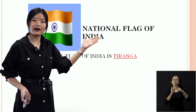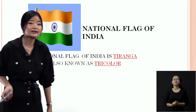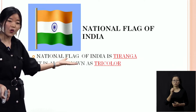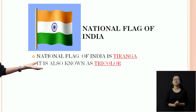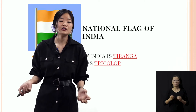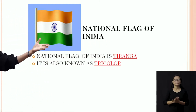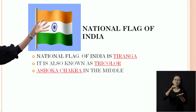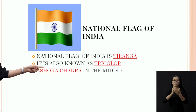Our national flag is also known as tricolour — T-R-I-C-O-L-O-R, tricolour. Now you all have observation power, right? So you know that our national flag has three colours. Before that, can you see a wheel in the middle? This wheel is called Ashoka Chakra — A-S-H-O-K-A-C-H-A-K-R-A, Ashoka Chakra.